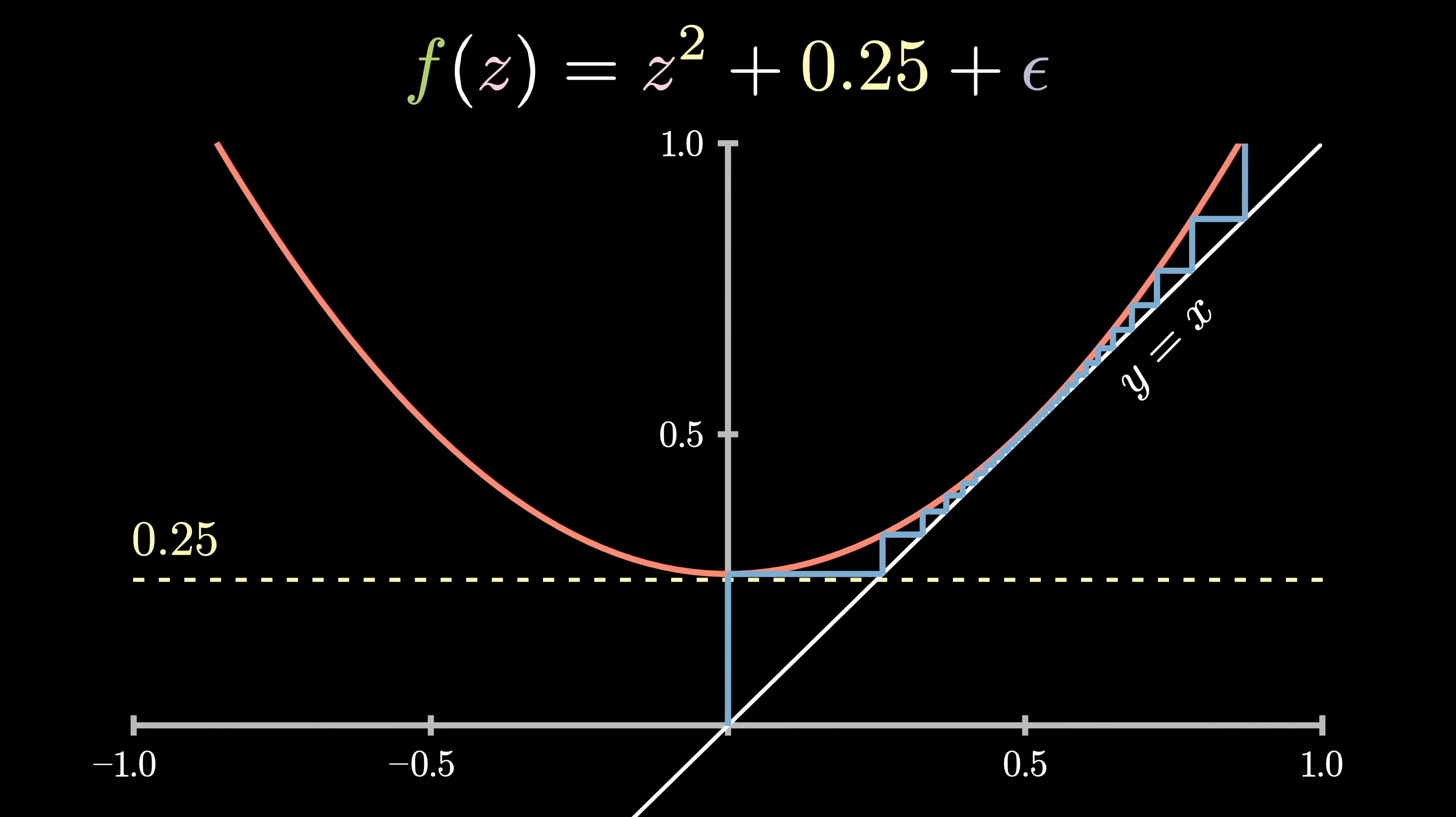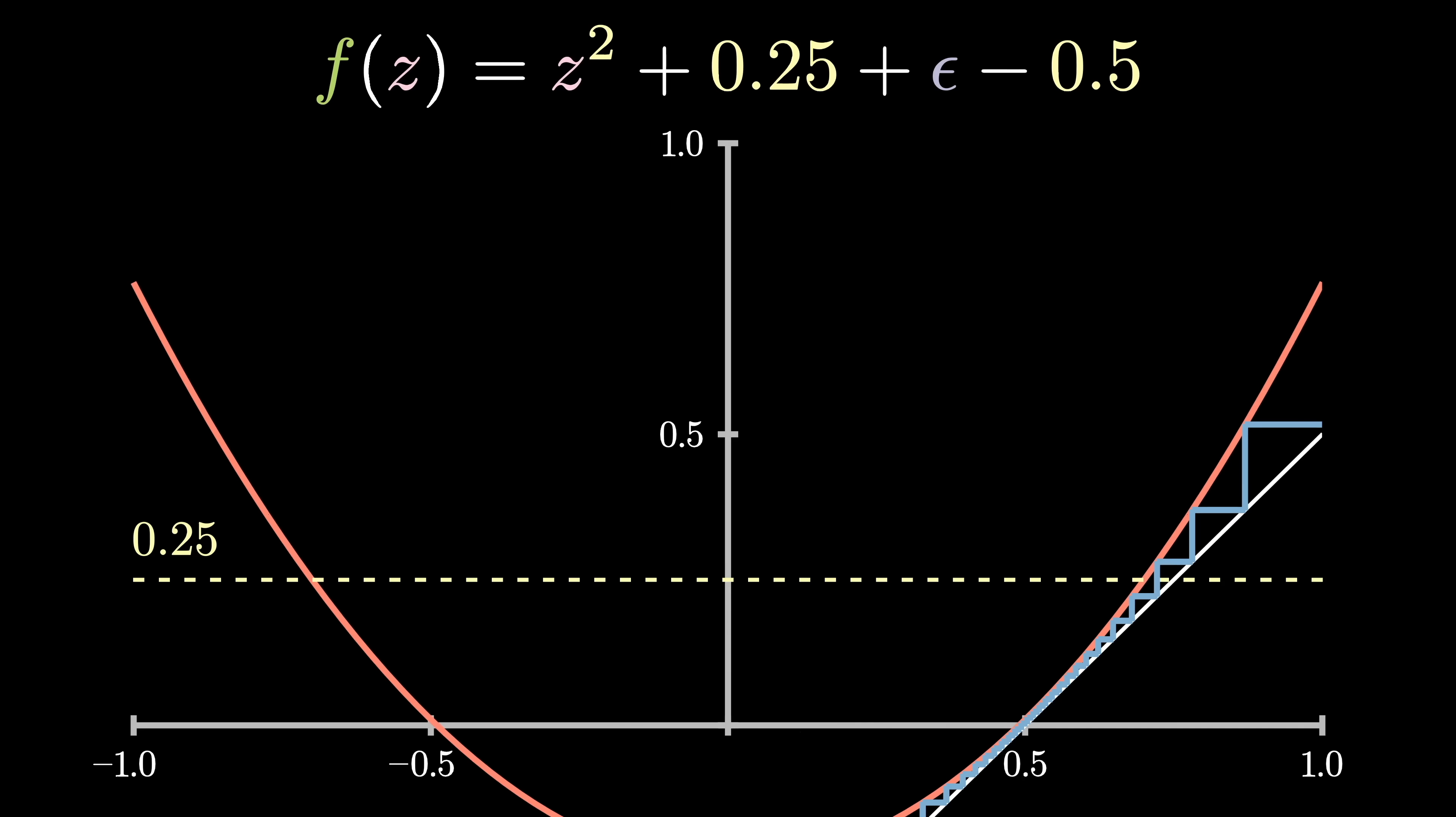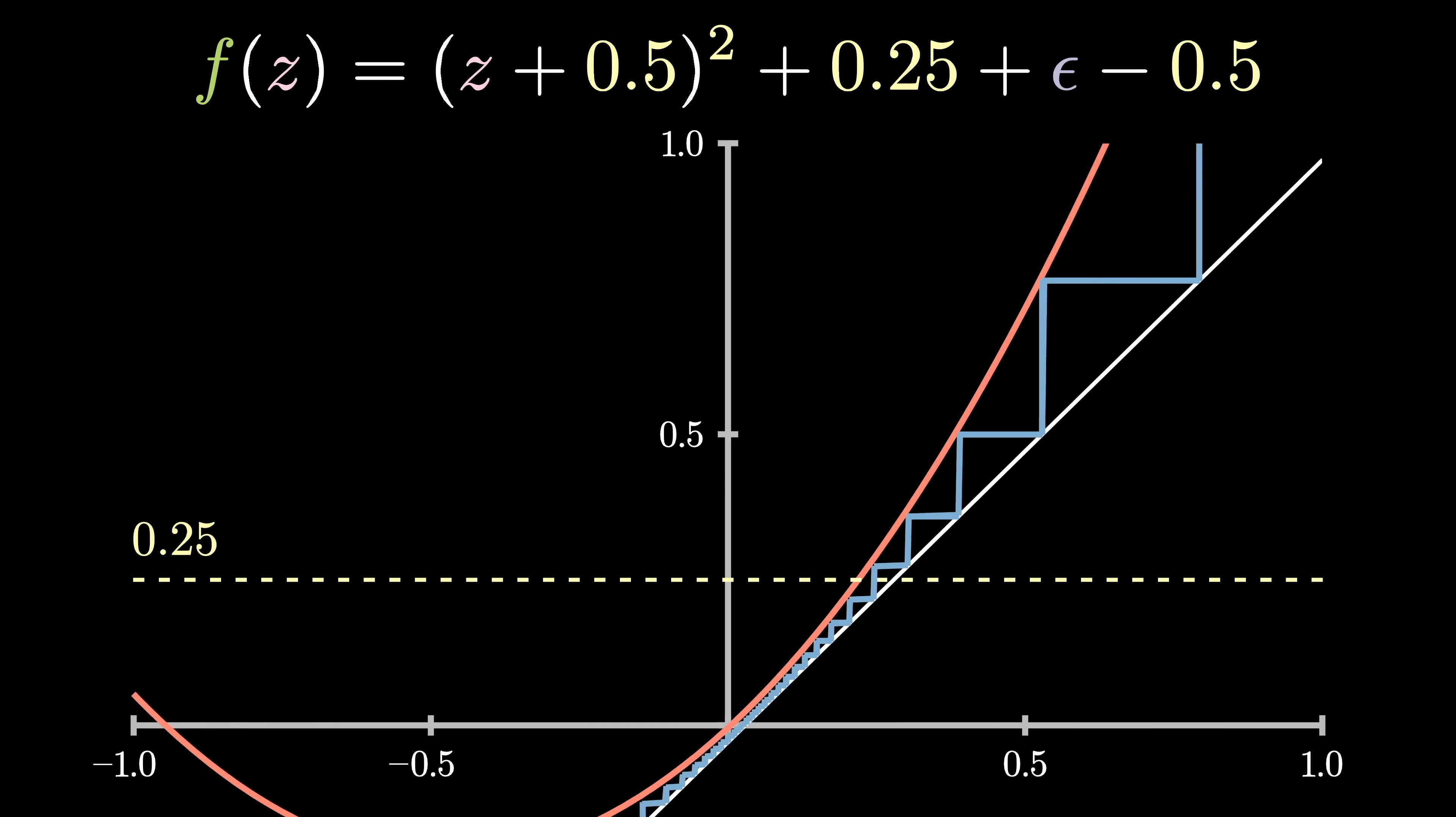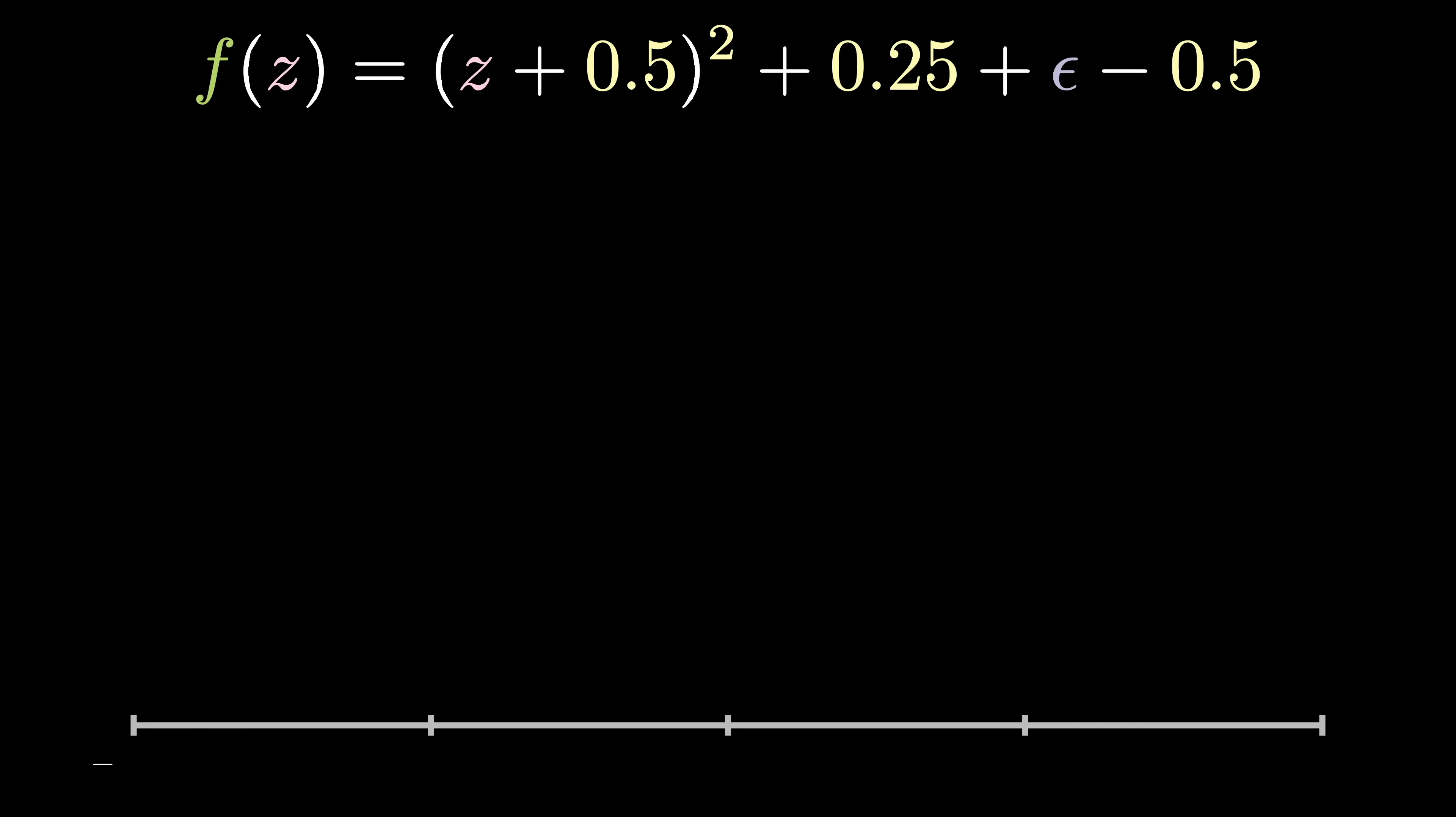So, to make the calculations easier, let's shift the entire parabola down and to the left, replacing z with z plus 0.5 and subtracting 0.5 from the function. Simplifying, this gives us f(z) equals z squared plus z plus epsilon. Well, now let's treat it right, since considering the function as just a parabola is kind of missing the point.